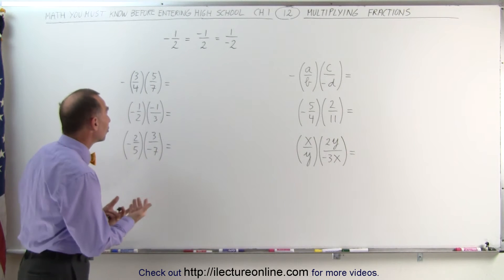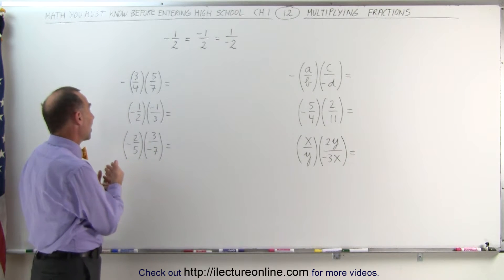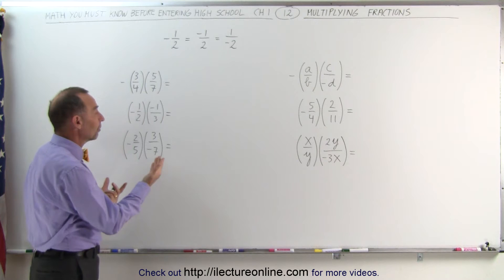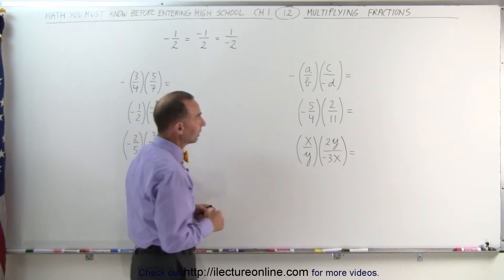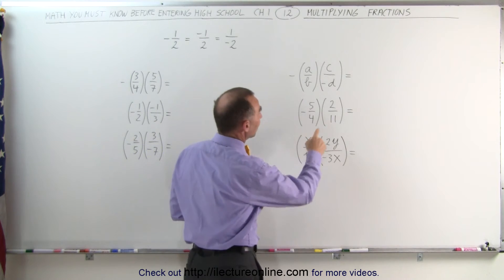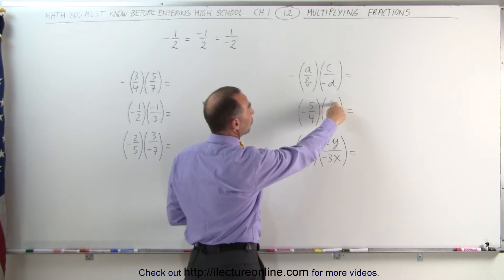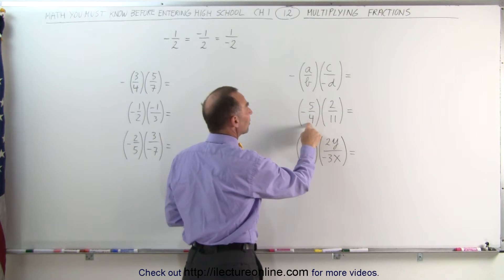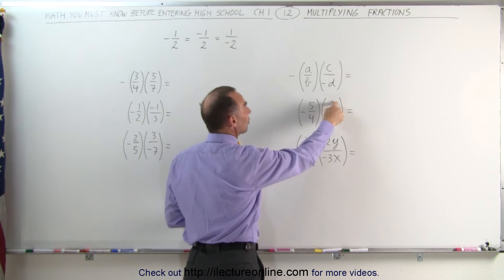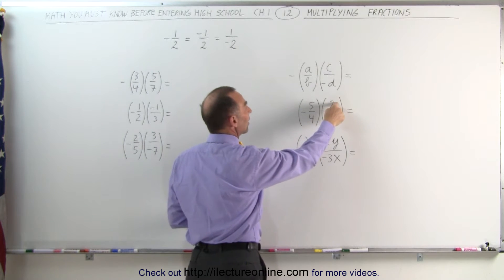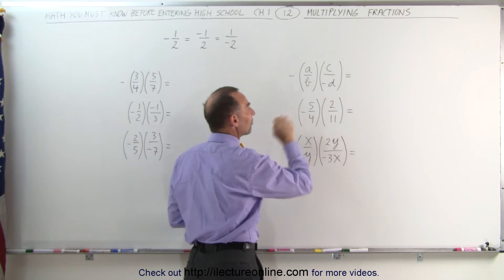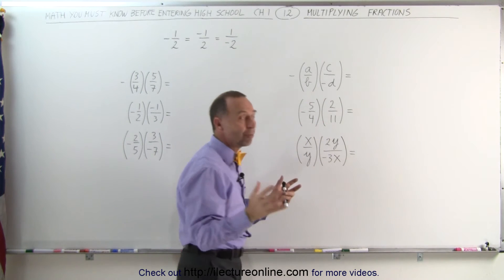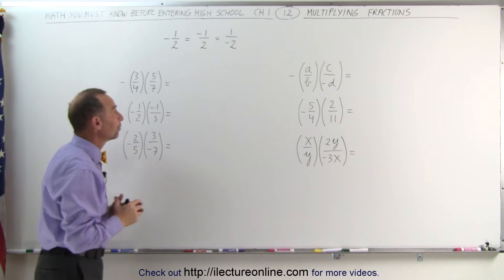In addition, sometimes you can simplify the fraction before you multiply. For example, here we have a 2 in the numerator and a 4 in the denominator. You can see that both can be divided by 2, so you can simplify the fractions before you actually do the multiplication.